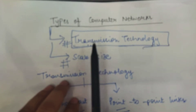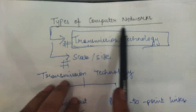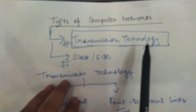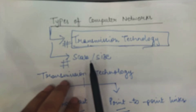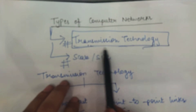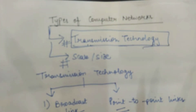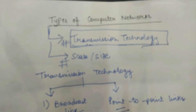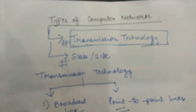In today's video we are going to study the classification of a computer network based on the transmission technology. We will not look at the classification based on the scale or size of the computer network today — we will only focus on the classification based on the transmission technology, which means what technology am I using to transmit the data from the sender to the receiver.